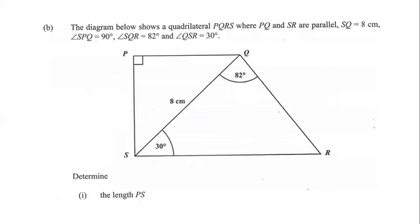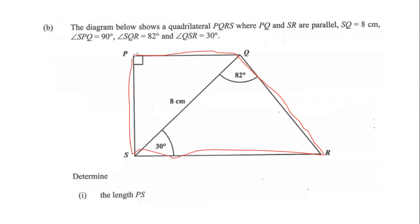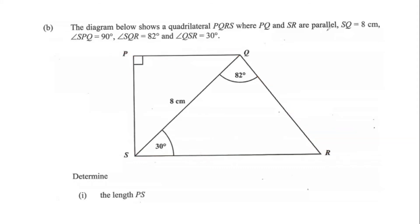Part b shows a quadrilateral PQRS where PQ and SR are parallel. SQ is 8 centimeters, angle SPQ is 90 degrees, angle SQR is 82 degrees, and angle QSR is 30 degrees.